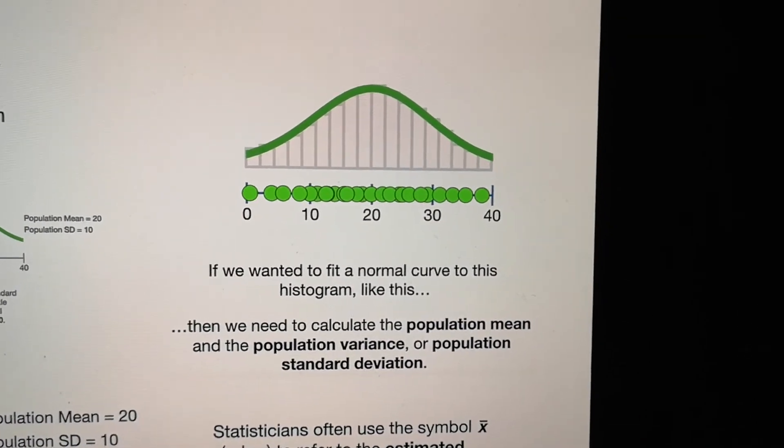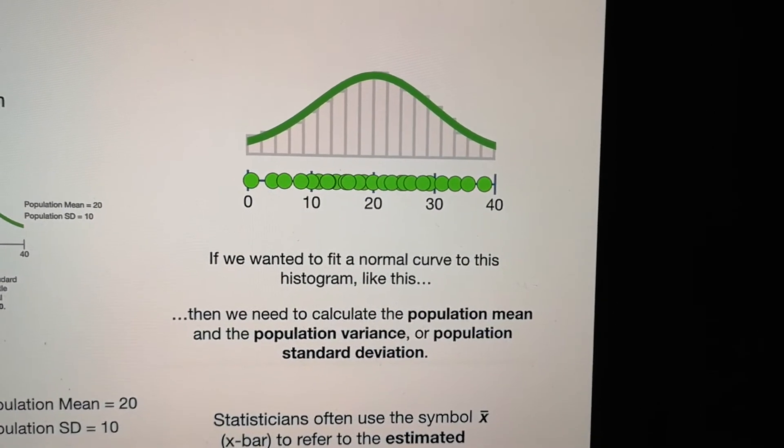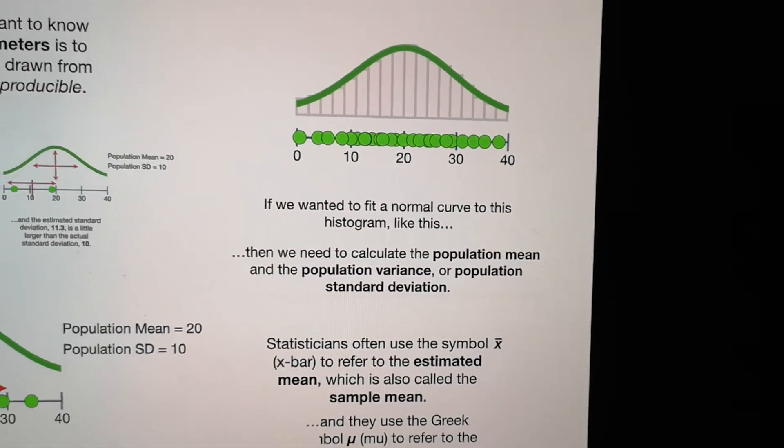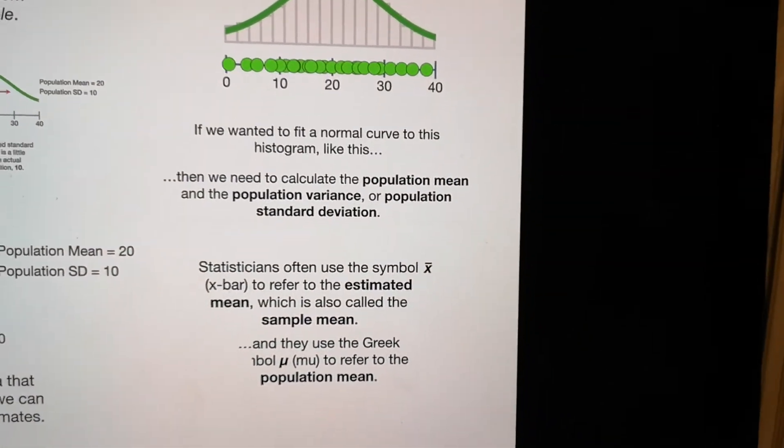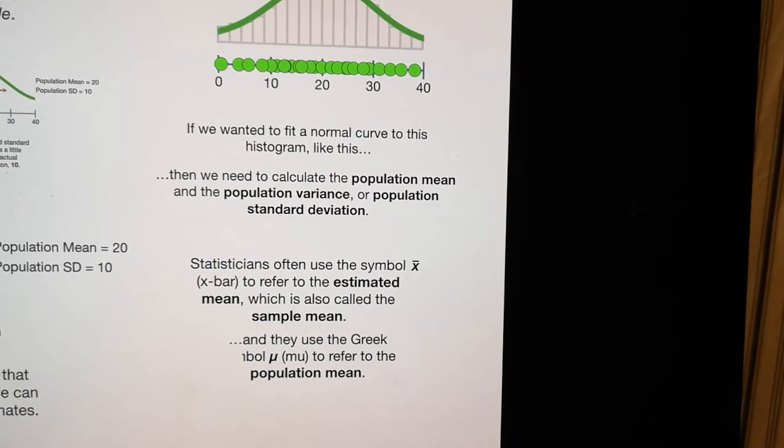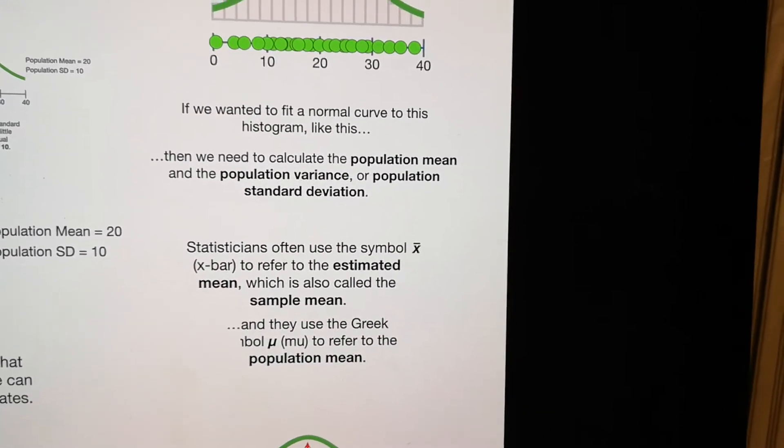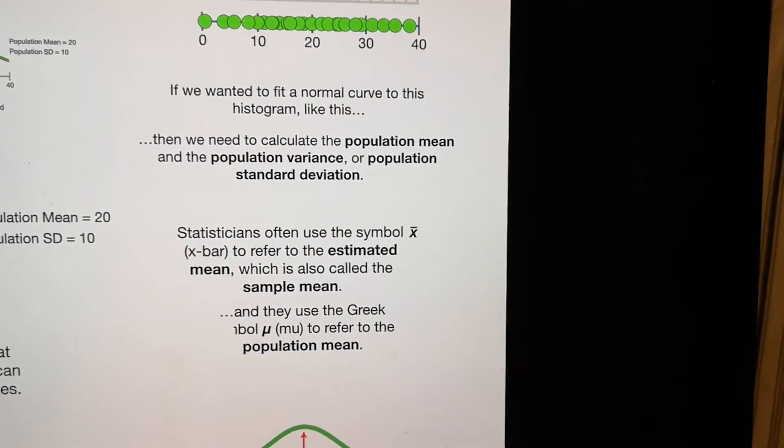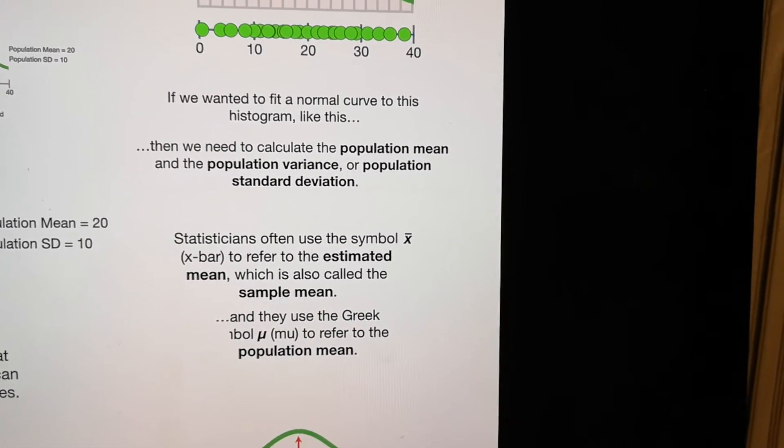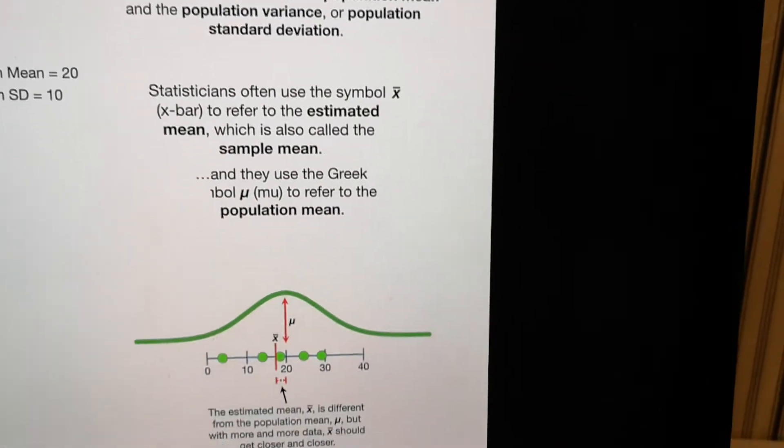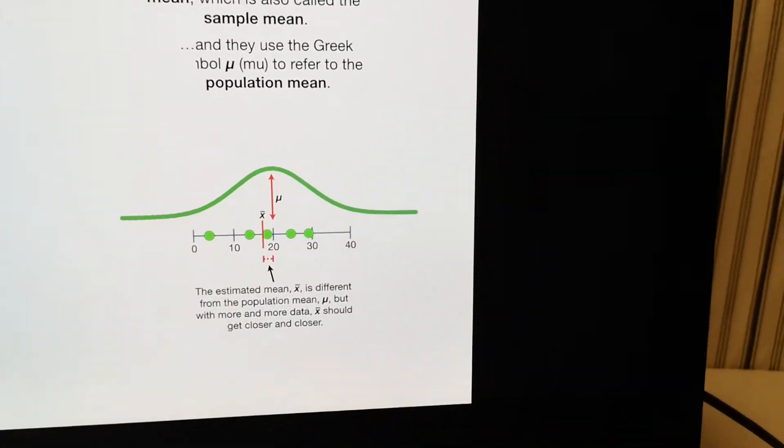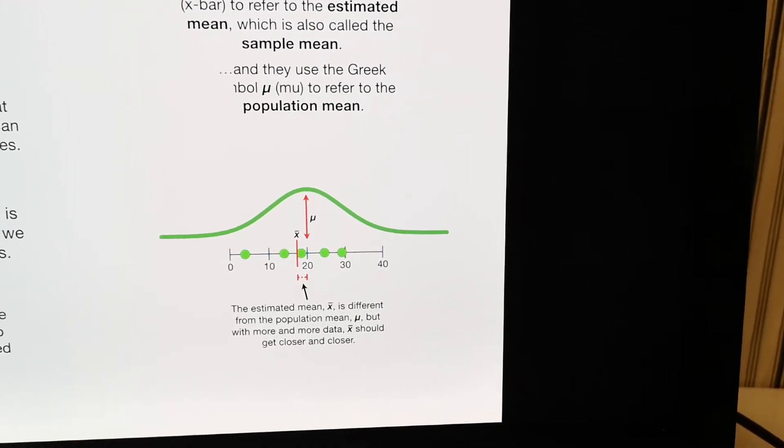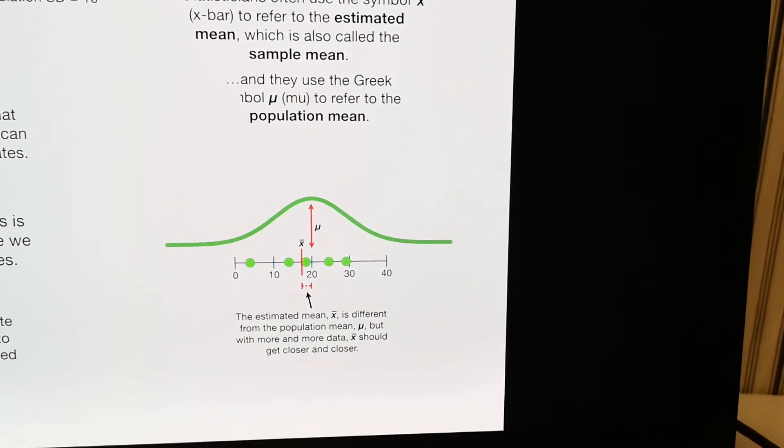We need to calculate the population mean and the population variance, or the standard deviation to define this population. And in statistics, if we get the sample, we use the symbol x-bar to refer to the estimated mean, which also called the sample mean. And we use the Greek symbol mu to refer to the population mean. Here we can see this is x-bar and mu stand for the sample estimation.